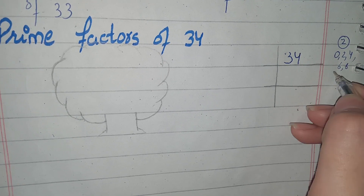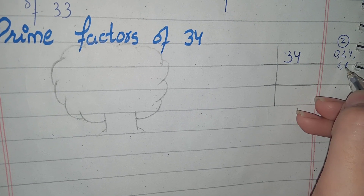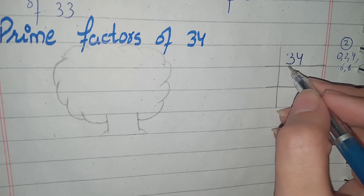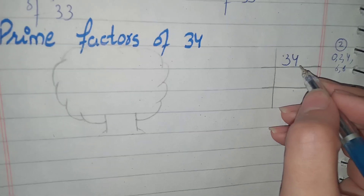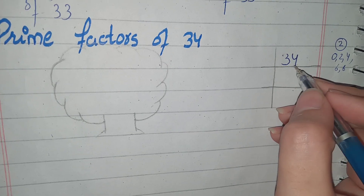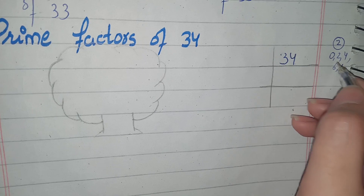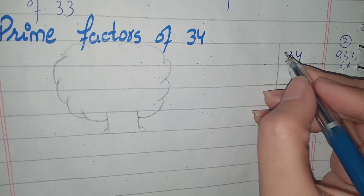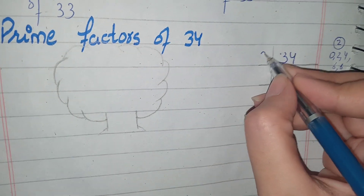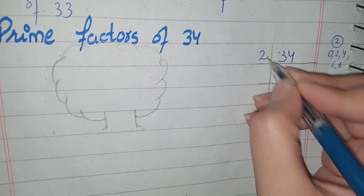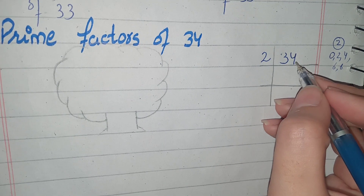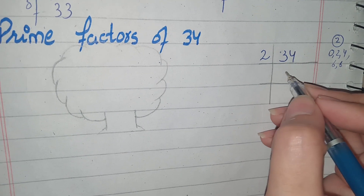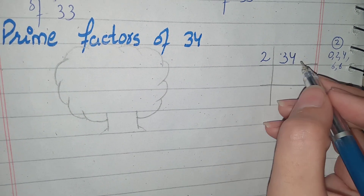If the number is divided by 2, we continue dividing. We write 34 in the table and divide by 2. In the table, it gives us 17.